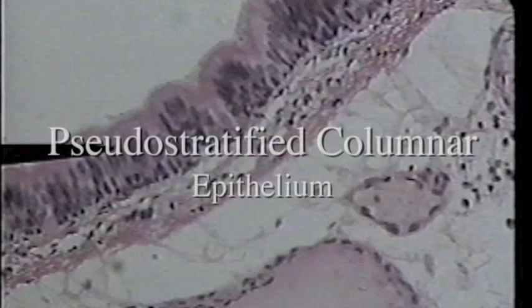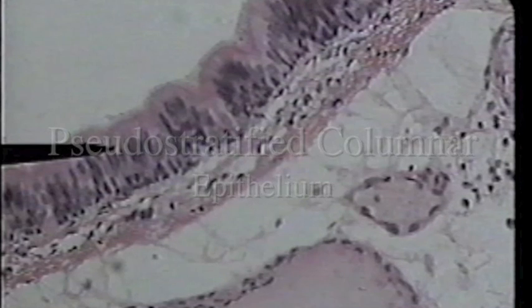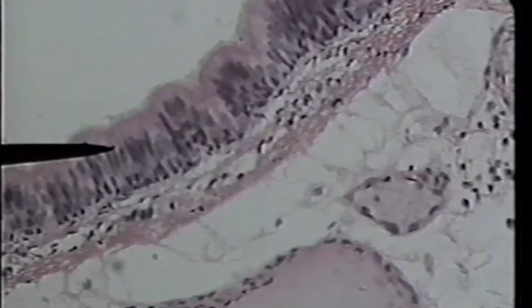We are looking at a slide of pseudo-stratified columnar epithelium on high power. The tip of the pointer is showing the dark nuclei. As you look at this slide, you'll notice that the most apical cells, or the cells nearest the lumen, are columnar in shape. You can clearly see the pink cytoplasmic region nearest the lumen — that is how we can tell these cells are columnar. At first glance, it appears that there are multiple layers of cells, however each of these cells is actually in contact with the basement lamina.